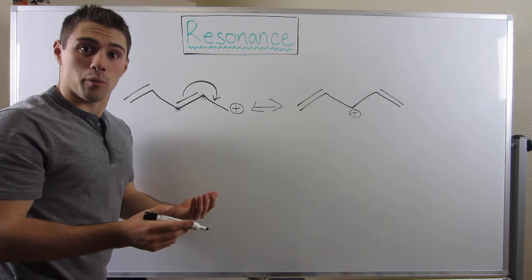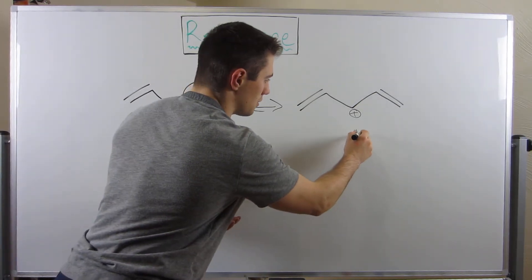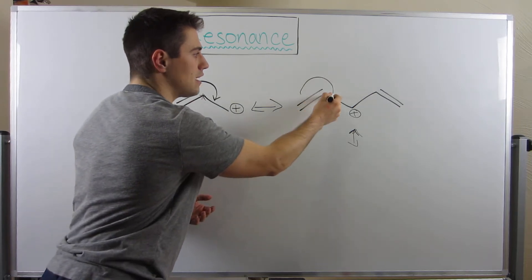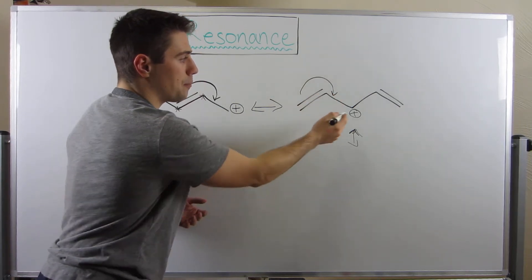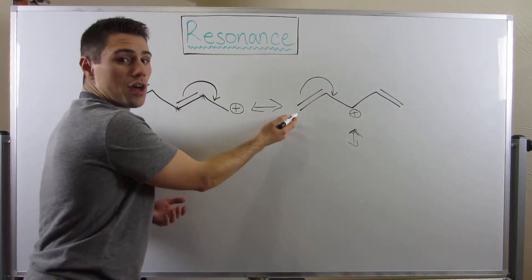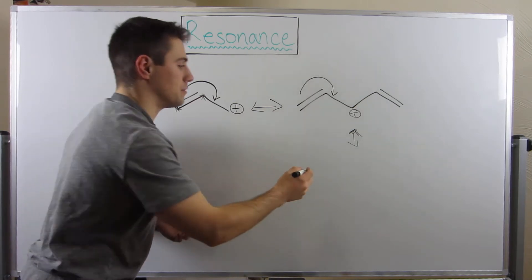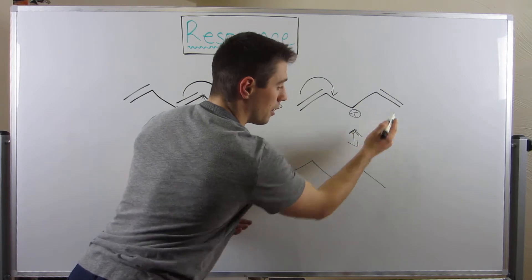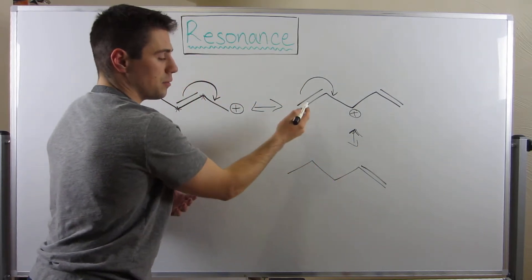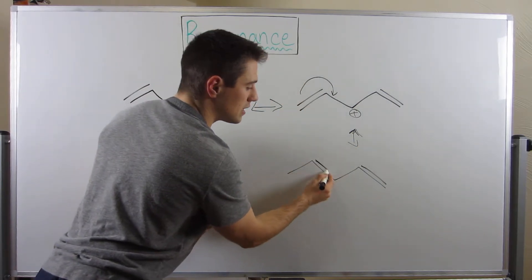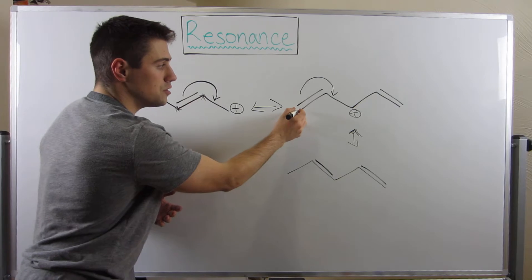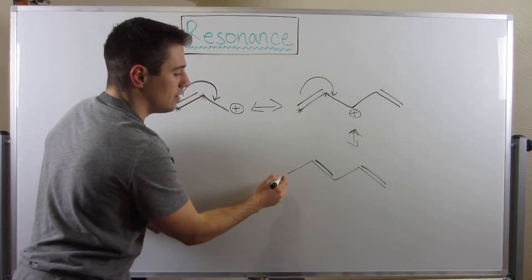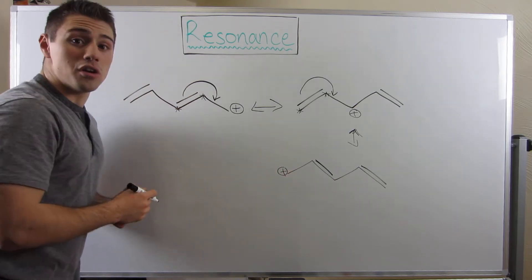We can even do that one more time. If I move this double bond over here, then the positive charge will shift from here to the terminal carbon. The other double bond wasn't touched, the new double bond is now moved over, this carbon loses the double bond, and the positive charge moves to the terminal position.